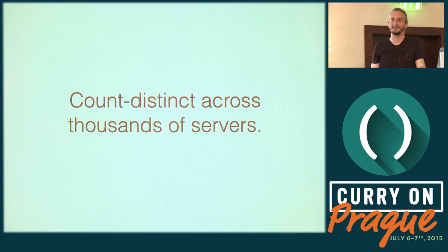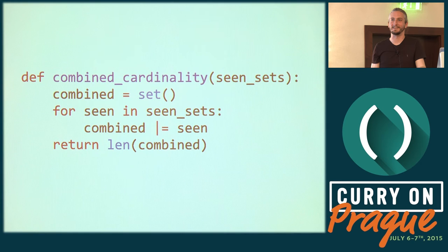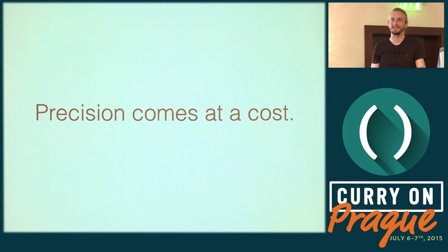The naive distributed solution: each server keeps a set of its seen items, and when done sends it down to a central server to combine using a union operator. Simple, but precision comes at a cost. If each server sees up to a hundred million unique items, even hashing each input down to a 64-bit integer, the size would be about 800 megabytes per server. Across a thousand servers, that's 800 gigabytes of data to pump into the combined cardinality function. This clearly doesn't work — you'd either need to install one of those big data systems or find a different solution.